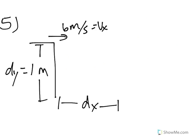Number five, a steel marble leaves a horizontal ramp at a speed of 6 meters per second — that's your velocity in the x. It falls to the floor one meter below — that's your distance in the y. For part A, we're looking for how long it was in the air, so we're going to use the dy formula to figure that out.